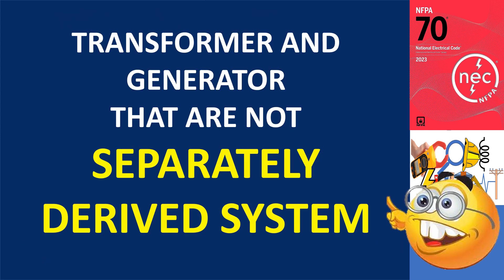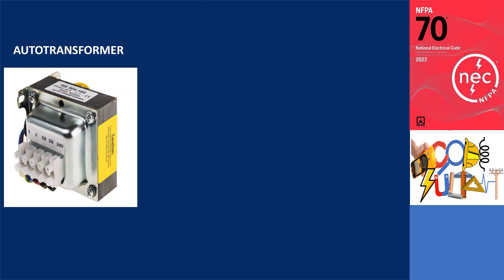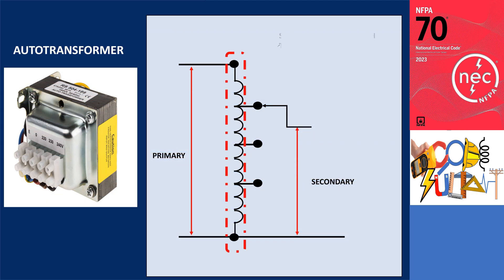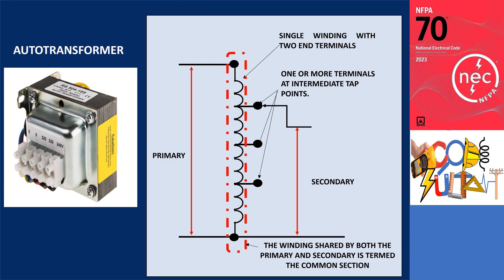It's worth noting that not all transformers and generators qualify as separately derived systems. An auto-transformer, for instance, features a single winding with two end terminals and one or more terminals at intermediate tap points. The segment of the winding shared by both the primary and secondary is termed the common section, thus establishing a direct connection to another source.